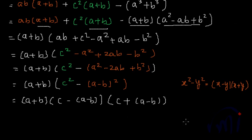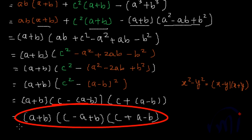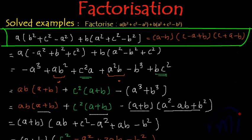Opening the brackets: the first bracket gives C minus A plus B, and since a plus sign is outside the second bracket, no signs change, giving C plus A minus B. So the three factors of this expression are A plus B, multiplied by C minus A plus B, multiplied by C plus A minus B. It was a long explanation but worth learning.